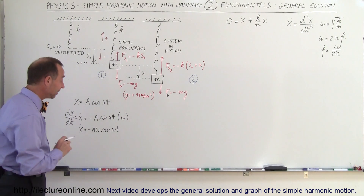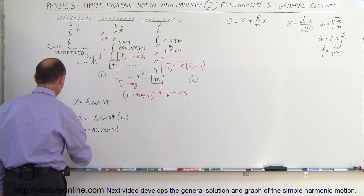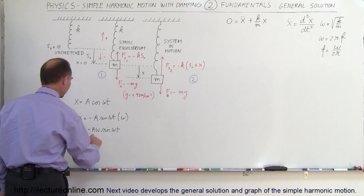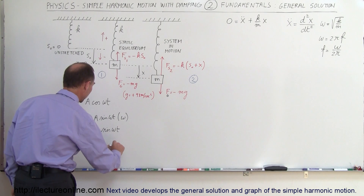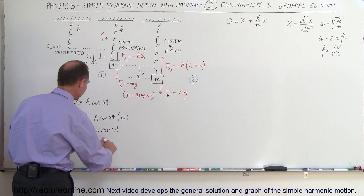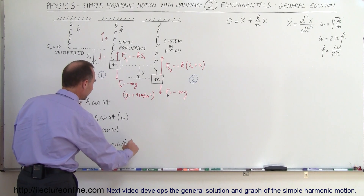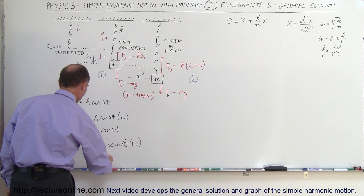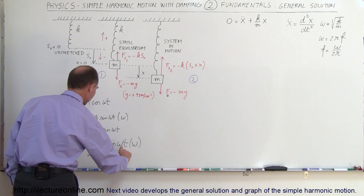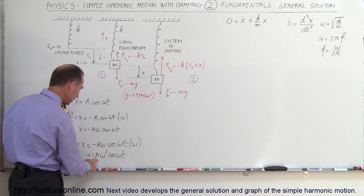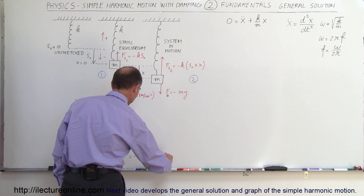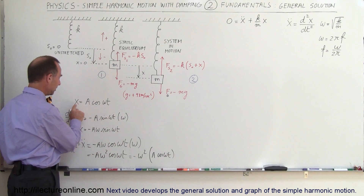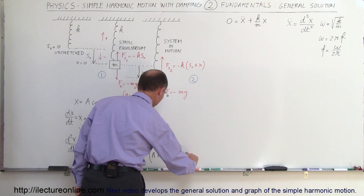Now if we take the derivative again a second time, look what we get. The second derivative of x with respect to time — x-double-dot — is the derivative of that expression. The derivative of sine is cosine, so we get minus a·omega times the cosine of omega t, times the derivative of the angle which is omega. This becomes minus a·omega-squared times the cosine of omega t. Notice that a·cosine(omega t) is just x, so this can be written as minus omega-squared times x.